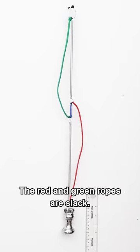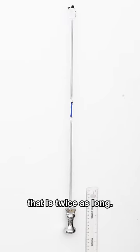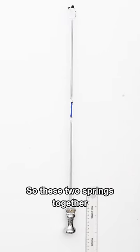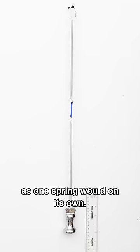The red and green ropes are slack. They're not doing anything. And so we have a spring that is twice as long. So these two springs together will extend twice as far as one spring would on its own. You could say that these springs are in series.